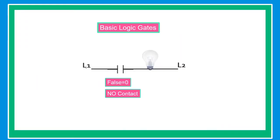Before we go on with our discussion, let's discuss first the normally open and normally closed contact. In this example, the bulb is not glowing because the contact is normally open, or false. The current from line one cannot pass through the circuit. In example number two, the bulb is now glowing because the contact is normally closed, and the current from line one can pass through the circuit going to line two.